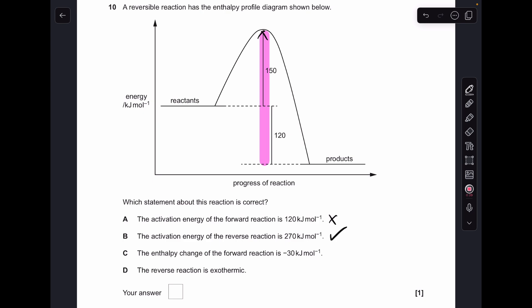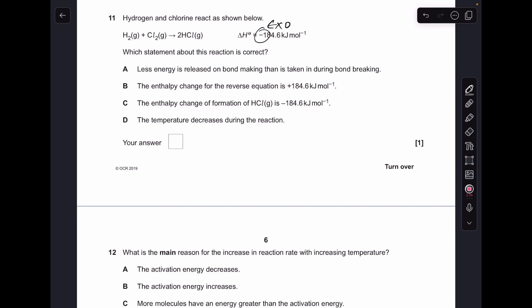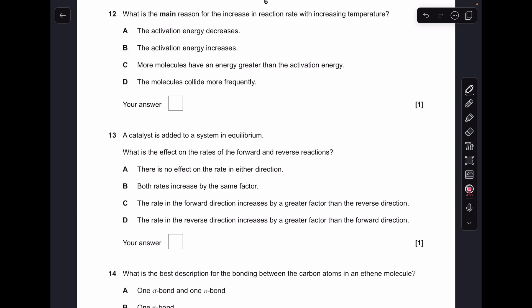Number 11, so you can see I've written up exothermic next to the delta H, that's because the sign is negative, so that rules out A and D. So it's up with B: the enthalpy change for the reverse reaction is plus 184.6. Yep, that's right because all you do is change the sign of the enthalpy change. C is wrong because the enthalpy change of formation of HCl is going to be half that value because this reaction is producing two moles of HCl not one.